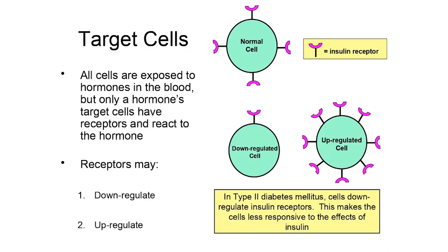I want to talk a little more about the target cells for a particular hormone. Cells are exposed to hormones in the blood because all living cells have a close contact relationship with the blood. However, only certain cells have receptors for a particular hormone and are thus able to respond to it — those are the target cells. In this picture, each little purple structure on the outside of the cell represents a receptor for insulin, making this cell a target cell for insulin.